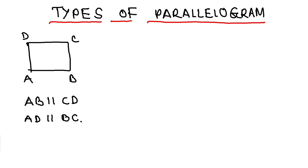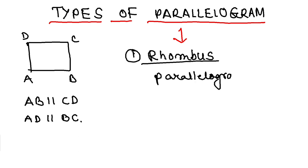Here we shall discuss the types of parallelogram. There are three. Of course, the first one is a rhombus. What happens in a rhombus? Rhombus is a parallelogram, and in a rhombus all the sides are equal.